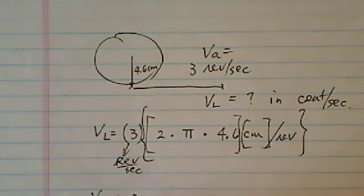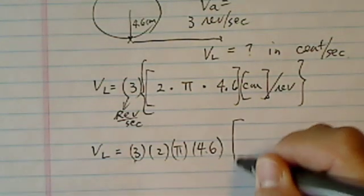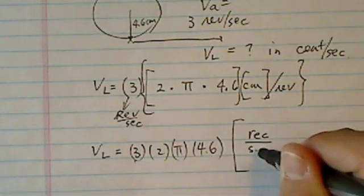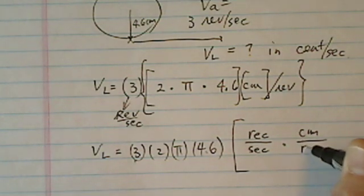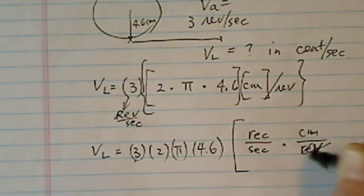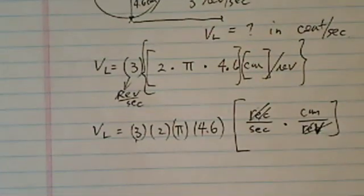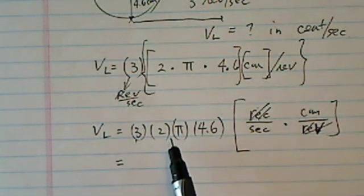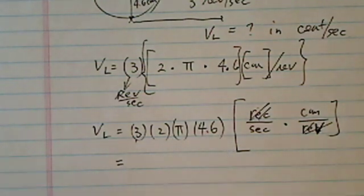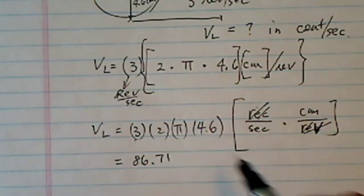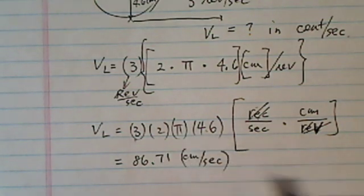And 3 has a unit of rev per second. So to be linear, let's put all the numbers together: 3 times 2 times π times 4.6. Let's take a look at our units. We should have the correct units: revs per second, and then centimeters per rev. Rev cancels out, we have centimeters per second. If you crunch into your calculator, it's 3 times 2 π times 4.6. I end up with 86.71. It's going to be 86.71 centimeters per second. And that's our linear velocity.